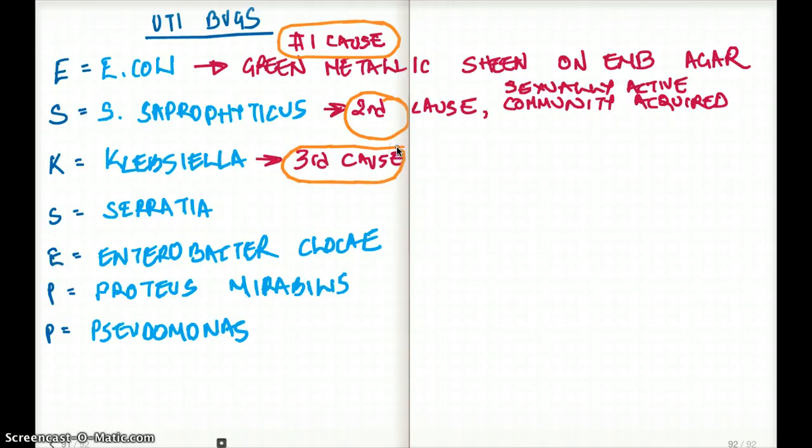What if I say now what's the cause of UTI, what's the bug for UTI which causes a green metallic sheen on EMB agar? That's going to be our E. coli. But what if I say what's the cause of UTI which is seen in sexually active women who acquired the UTI, the UTI was acquired in a community acquired setting?